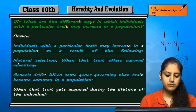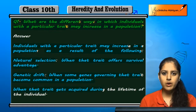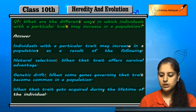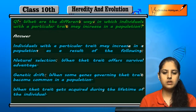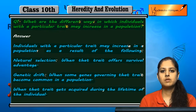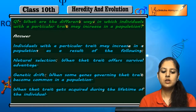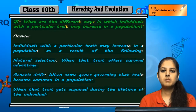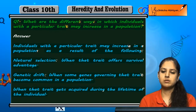The third way is when that trait gets acquired during the lifetime of the individual. If it is acquired during the entire lifetime of the individual, then it can increase in the population.